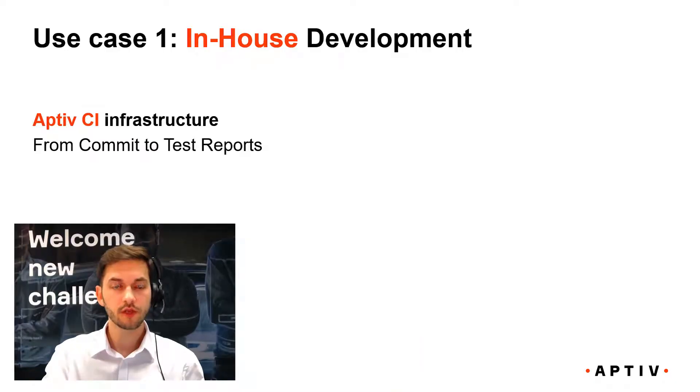In one of the use cases, we are doing the software development and system testing internally at Aptiv. In the second use case, we are going to have external software development, but system testing at Aptiv. Starting with the in-house development use case where we use Aptiv's CI infrastructure from commit to build, I'm going to show you a simple flow of what it can look like.